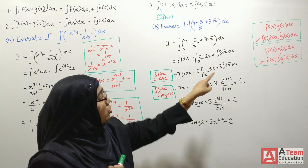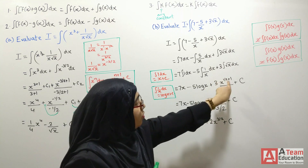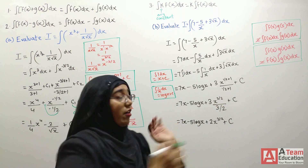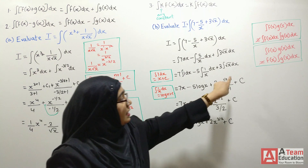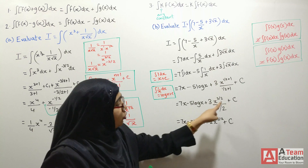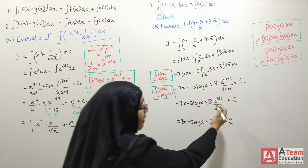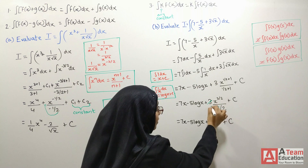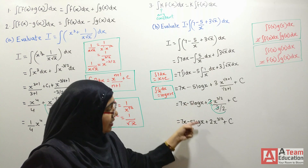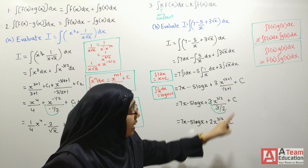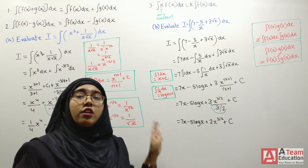Root x means x raised to 1/2, and its integration comes from the power rule: x raised to 1/2 plus 1 over 1/2 plus 1. So this is x raised to 3/2 over 3/2. The 3s cancel, giving a factor of 2. So the final answer is 7x minus 5 log x plus 3 times 2x raised to 3/2, which simplifies to 7x minus 5 log x plus 2x raised to 3/2, plus c.